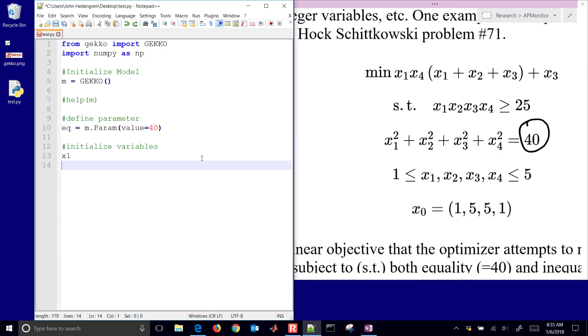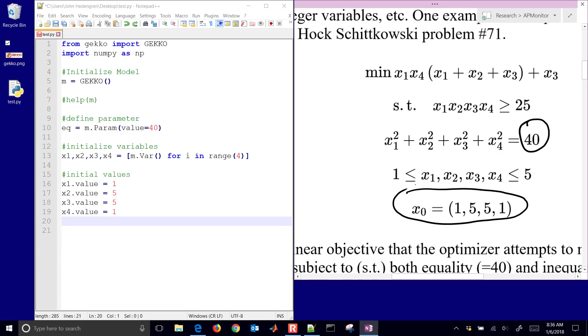Next, we want to initialize some variables. So I have X1. And I could set that equal to M.var for a variable. Or I could initialize all of them at the same time. And I'll do that here with M.variable for I in range 4. I'm just going to initialize all of them at the same time. And then I might want to give it some initial guesses, initial values. And so I'll just set the dot value property of those variables equal to the initial values that are specified in the optimization problem right there.